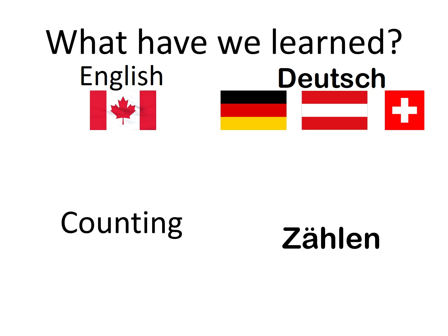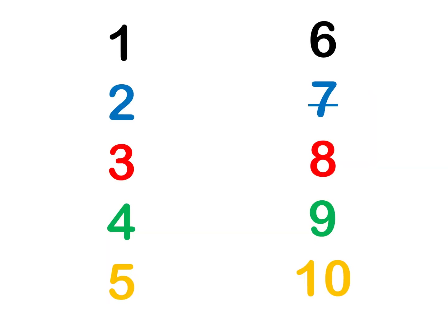We also learned how to count in German. Let's see how well we remember our zählen — our numbers, our counting in German. I'll say them first and then you can repeat. Eins, zwei, drei, vier, fünf, sechs, sieben, acht, neun, zehn.